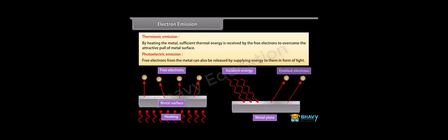The minimum energy — work function — required for electron emission from the metal surface can be supplied in any of the following ways: Field emission — electrons can be made to leave the metal surface by applying a strong electric field. Thermionic emission — by heating the metal, sufficient thermal energy is received by free electrons to overcome the attractive pull of the metal surface. Photoelectric emission — free electrons from the metal can also be released by supplying energy to them in the form of light.